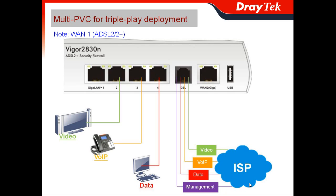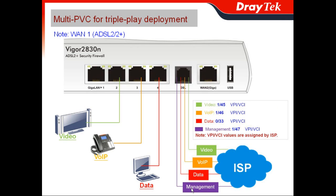The first question is that you need to separate these four kinds of services. Luckily, you can use our multi-subnet feature, which allows you to plug in different VPI and VCI values to separate these four kinds of services. Please note that the VPI and VCI values are assigned by the ISP, and JTAG supports all of these configurations.